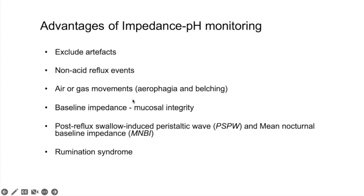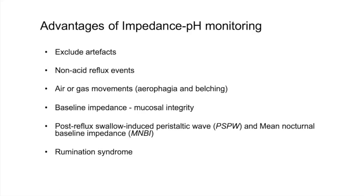The indications for impedance pH monitoring are becoming clearer: to exclude artifacts, detect non-acid reflux, assess air and gas movements, evaluate mucosal integrity, assess reflux clearance, and diagnose rumination syndrome. The two most common techniques — wireless pH-metry and catheter-based impedance pH monitoring — are complementary, not competitors. For typical heartburn without complicating factors, wireless pH-metry is sufficient. For suspected rumination, gas/belching symptoms, or PPI non-responders, impedance pH-metry is preferred.